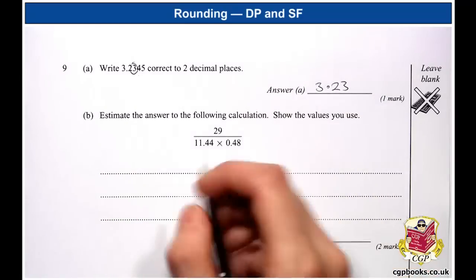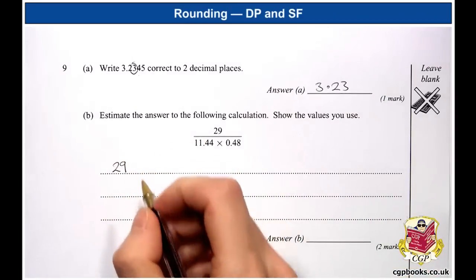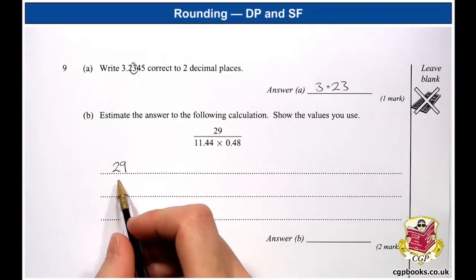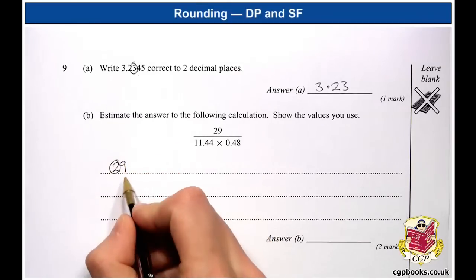So starting with the 29, write that down. OK, so for each of these, the last digit is going to be the first significant figure. So here it's 2. The decider is 9, so we round 2 up to 3.